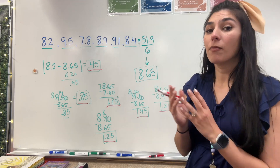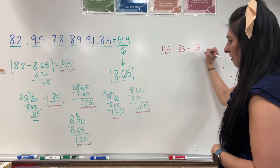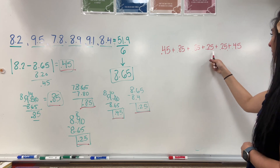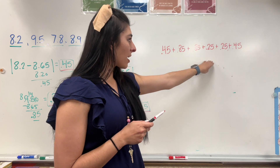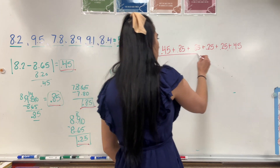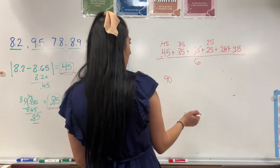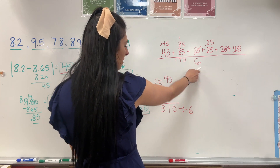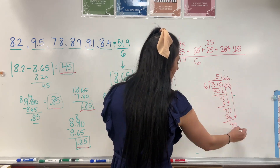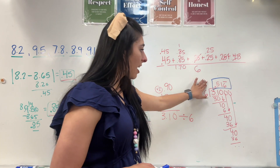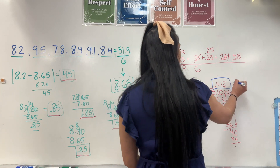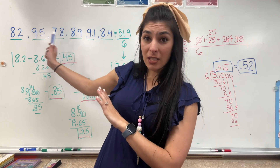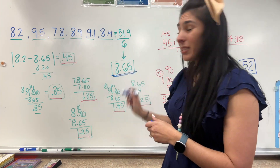I'm going to put those together and find the mean of those numbers: 0.45 plus 0.85 plus 0.85 plus 0.25 plus 0.25 plus 0.45. I started with six numbers, so I know I have them all. Now I'm going to add those up and divide by six. That gives me 3.10 divided by six, which is 0.516 repeating. I'm going to round that to 0.52. So that means each runner's time was about 0.52 minutes away from the average of 8.65.